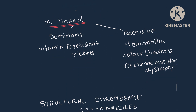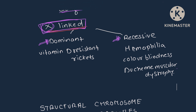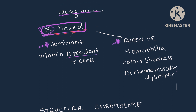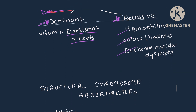Sex-linked (X-linked) diseases are divided into dominant and recessive, because the genes for these diseases are present on the X chromosome. In X-linked dominant, vitamin D-resistant rickets is an example. In X-linked recessive, hemophilia, color blindness, and muscular dystrophy are examples.